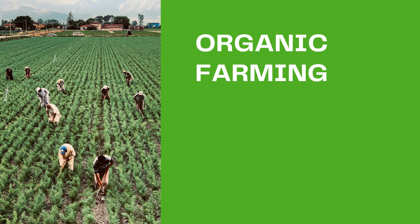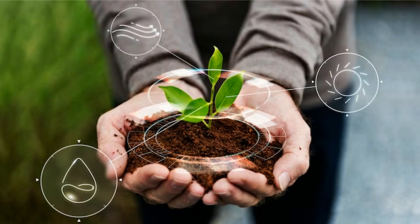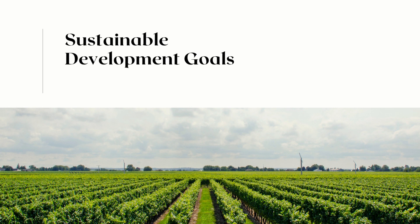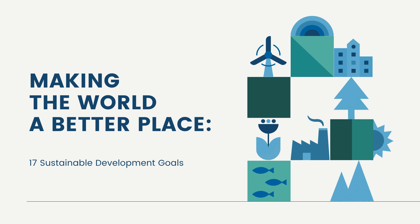Organic farming is where farmers do not use chemical pesticides or fertilizers to increase their production. They use organic and natural fertilizers such as cow dung to help in growing crops. This helps in better quality, chemical-free crops while at the same time maintaining the soil quality for future use. This is a true example of sustainable development where we are not only using environmental resources but also preserving them for future generations.